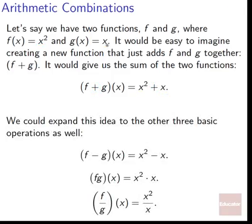We could expand this idea to the other three basic operations. With subtraction, f minus g becomes x squared minus x. fg of x would be x squared times x — fg being f times g, just like when we say 3x we mean 3 times x. And f divided by g would be x squared over x. Simple as that.